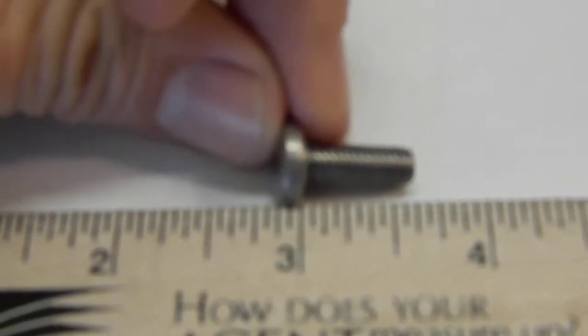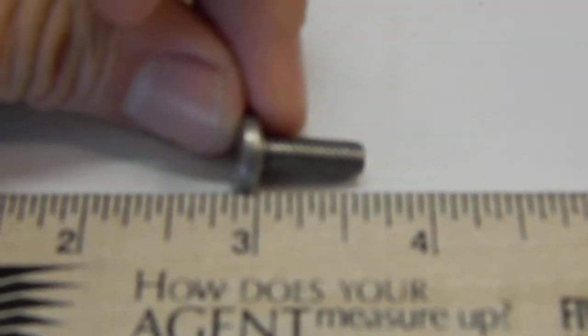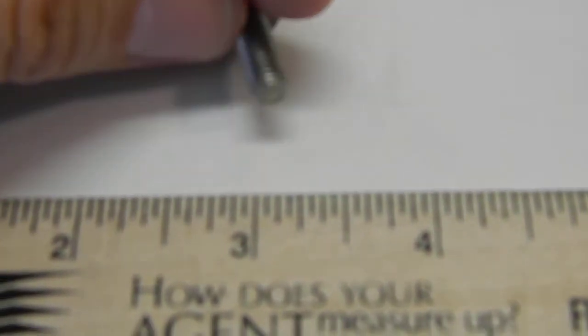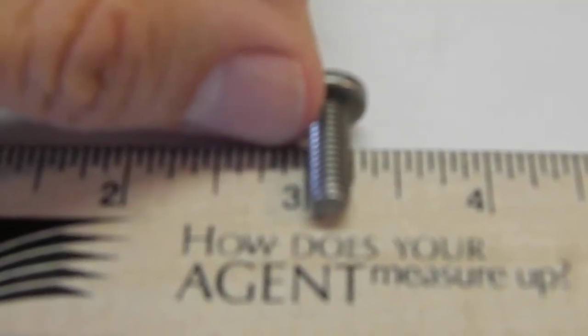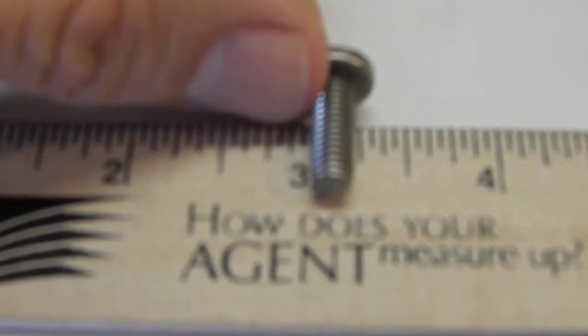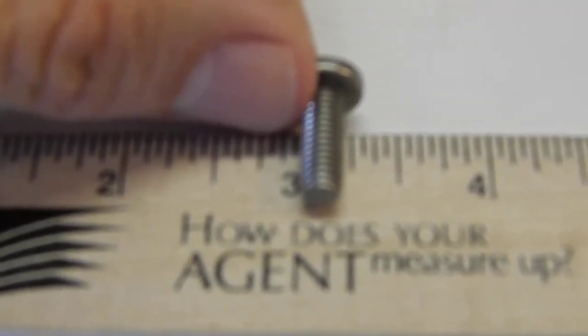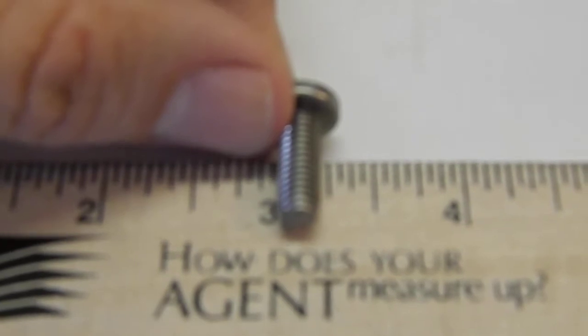This one looks to be about five eighths inch long. I can do the metric conversion for you if you can just tell me how long it is. We'll lay it on the ruler to see the diameter. Again, close enough for our needs. That's a quarter inch. I would identify that as an M6 or six millimeter screw.